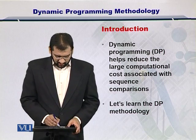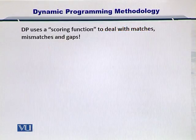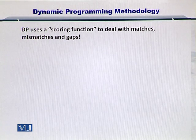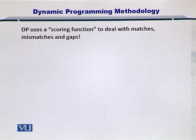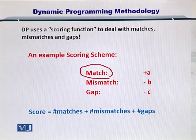So let's see how dynamic programming, or simply DP, works. DP is based on a scoring function. What are the elements in the scoring function and what are the possibilities that this scoring function can score? There are three possibilities. The first one is a match, where two nucleotides match with each other, or two amino acids match with each other.